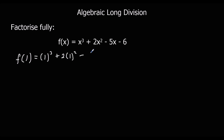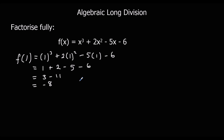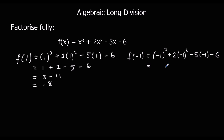With x equals 1: 1 cubed plus 2 times 1 squared minus 5 times 1 minus 6 gives 1 plus 2 minus 5 minus 6, which is 3 minus 11 equals minus 8. So x minus 1 is not a factor. Try x equals negative 1: negative 1 cubed plus 2 times negative 1 squared minus 5 times negative 1 minus 6 gives negative 1 plus 2 plus 5 minus 6 equals 0. So f(−1) equals 0, meaning x plus 1 is a factor.